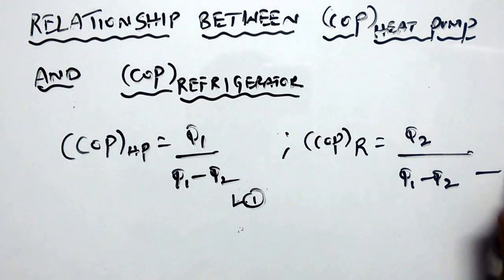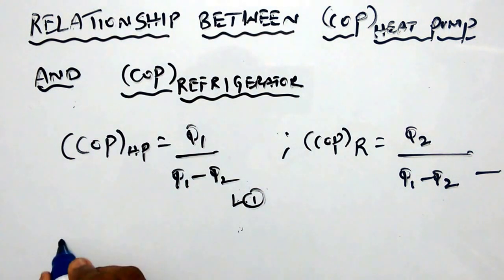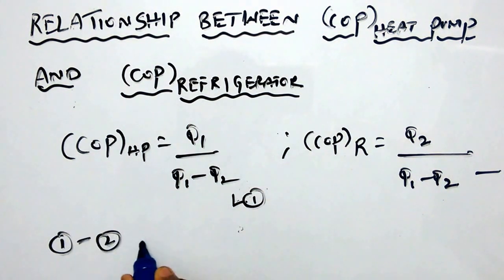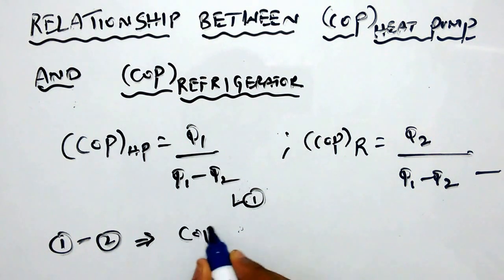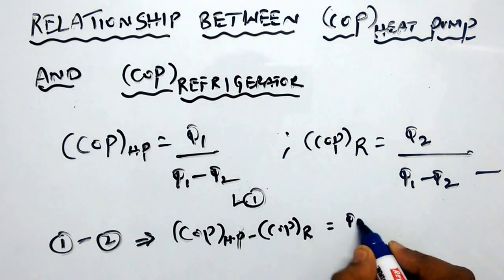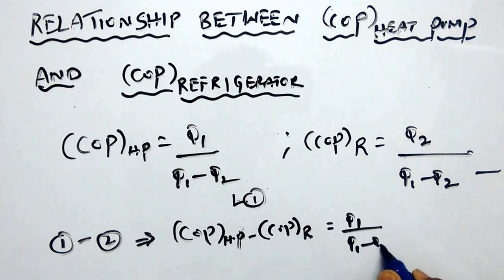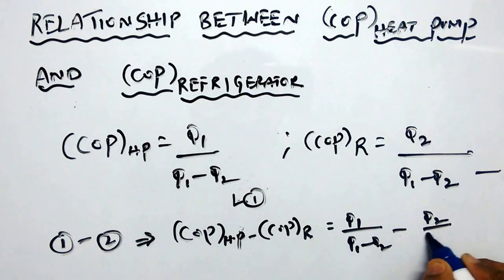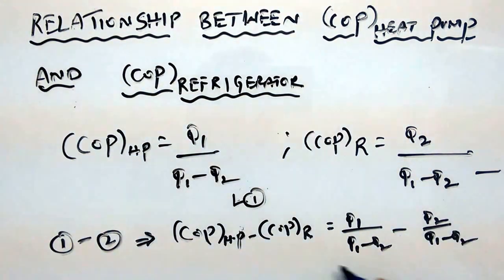One minus two gives COP of heat pump minus COP of the refrigerator equals Q1 divided by Q1 minus Q2, minus Q2 divided by Q1 minus Q2. So that is equal to Q1 minus Q2 divided by Q1 minus Q2.